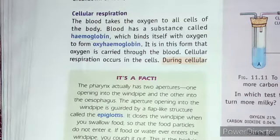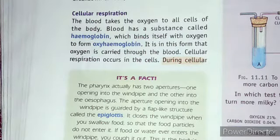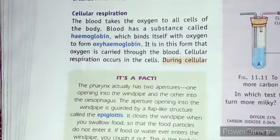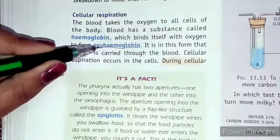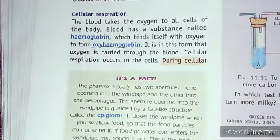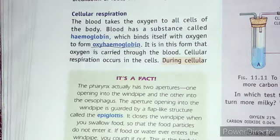What happens in this respiration is that the blood takes oxygen from all the cells, and then the hemoglobin which is present in the blood binds itself with the oxygen, and afterwards it forms oxyhemoglobin. This oxygen is then carried by the blood.